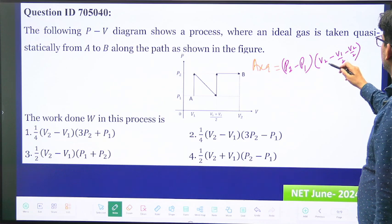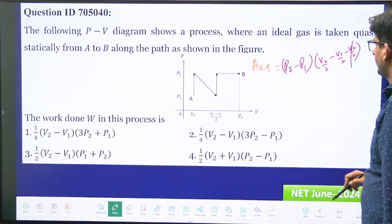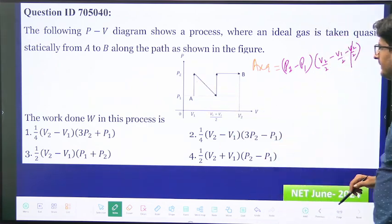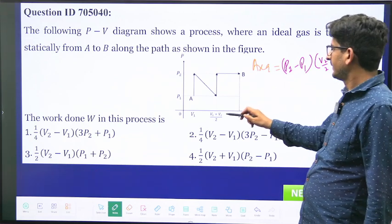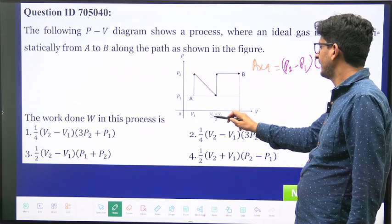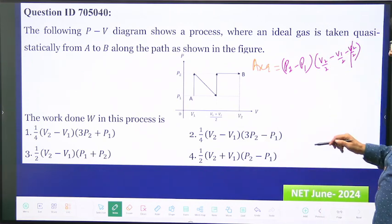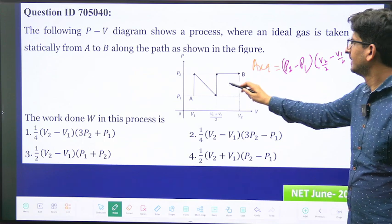And this will be just, this will cancel and it will become v2 by 2. So this much area, and this area will be just, you can see this difference v1 and this, and then this average of this and then this.